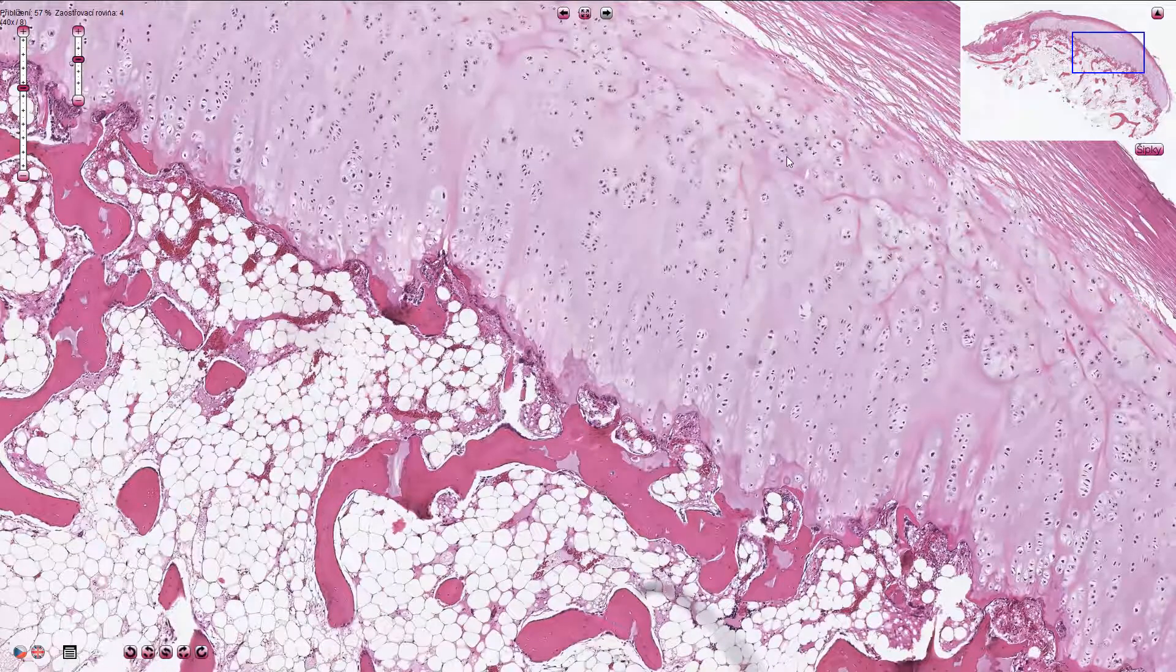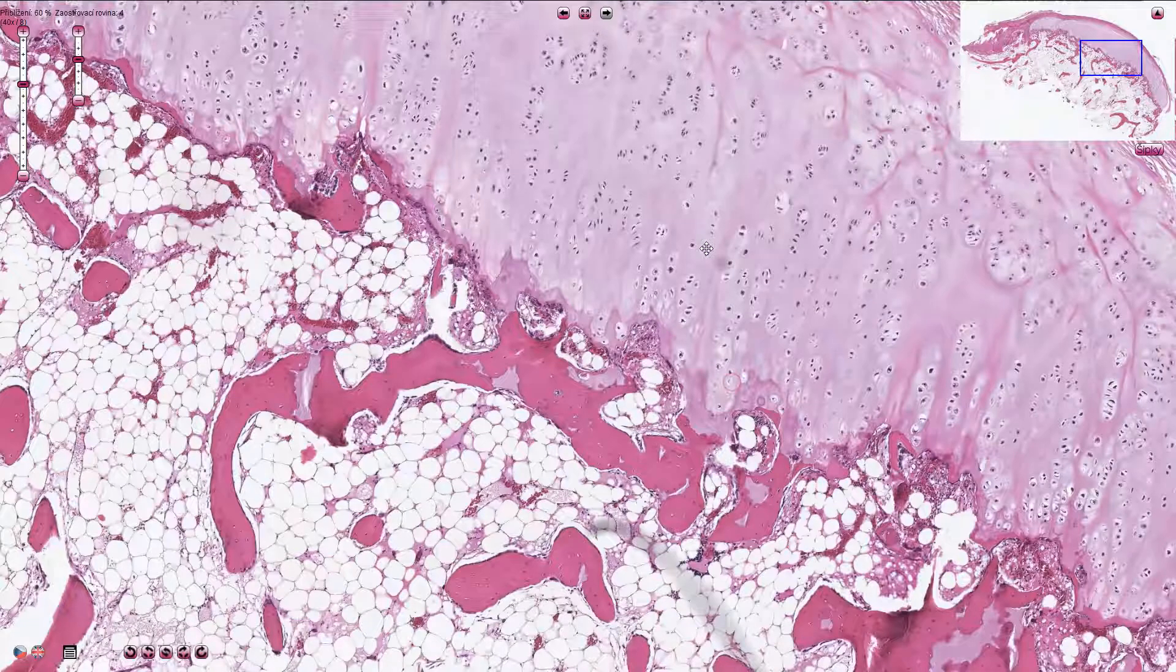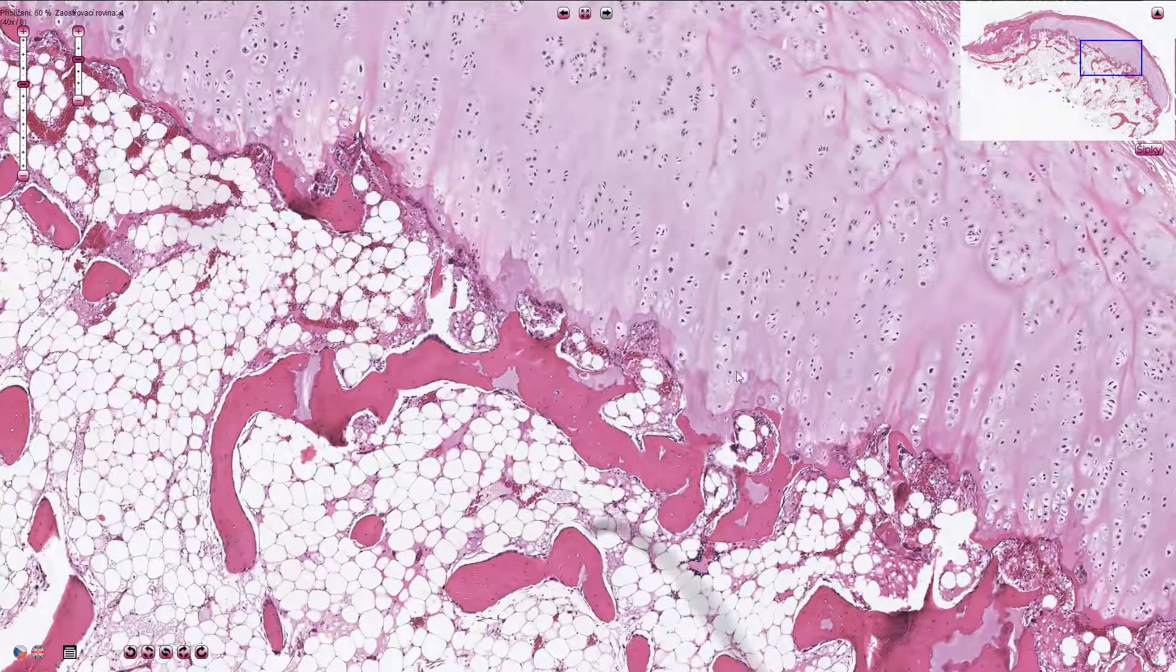So here we have quite small inconspicuous chondrocytes, and here we have slightly larger chondrocytes arranged in columns.